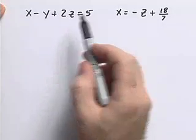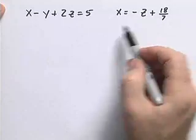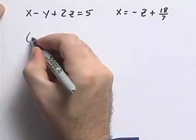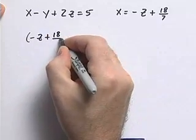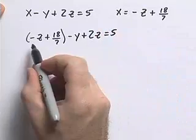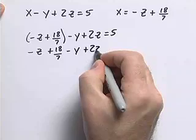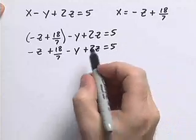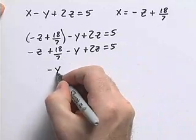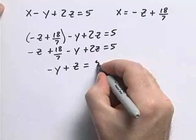Now we need to get y in terms of z. We take our expression for x and substitute it into our first equation. Plugging in, we have: negative z plus 18 sevenths, minus y, plus 2z equals 5. Removing grouping symbols: negative z plus 18 sevenths minus y plus 2z equals 5. Collecting like terms: negative y plus z equals 5 minus 18 sevenths.